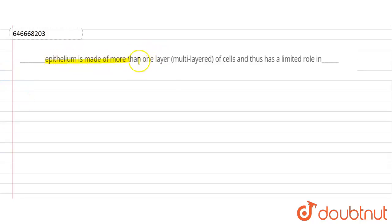Dash epithelium is made up of more than one layer, that is multi-layered of the cell, and thus has a limited role in... Okay, so whenever epithelium is present, for example if we talk about the cuboidal epithelium, then the cuboidal epithelium, that is a simple cuboidal epithelium.